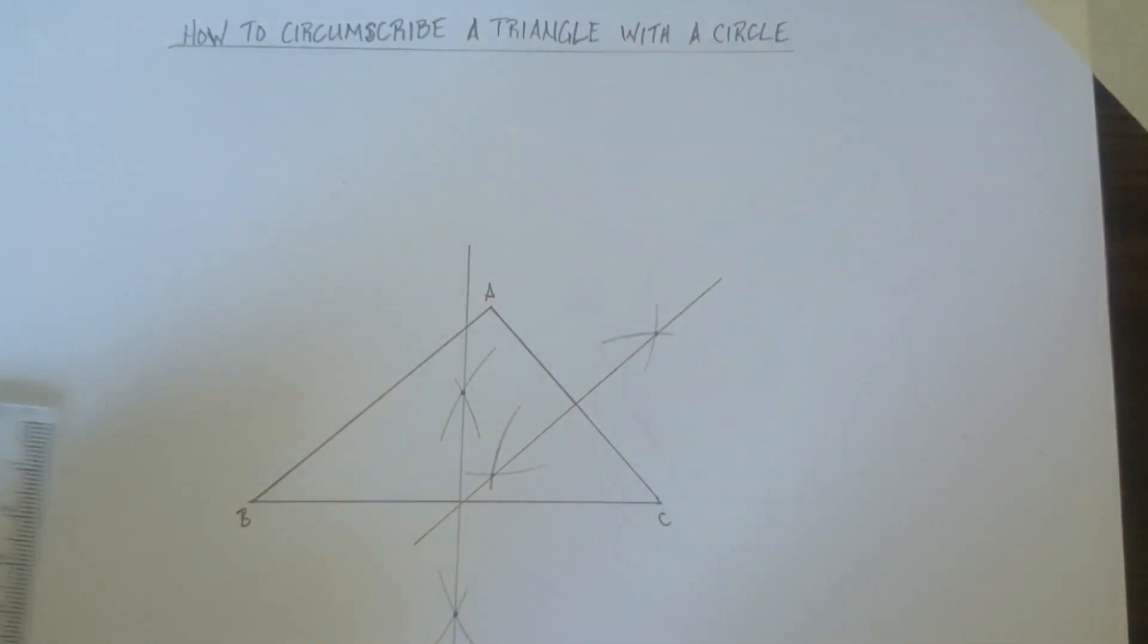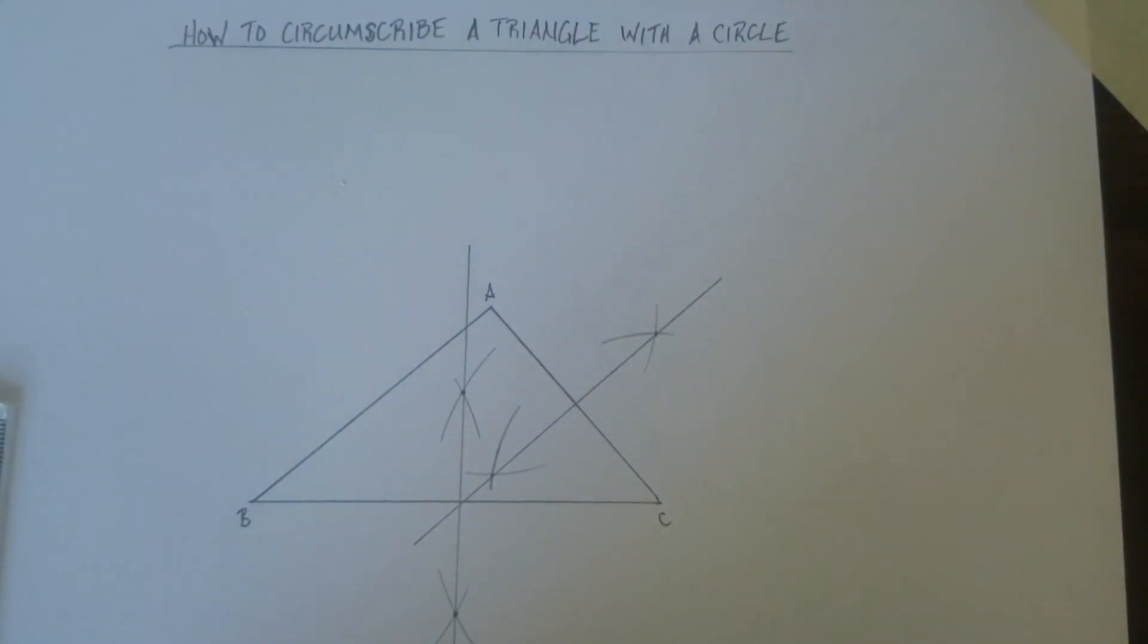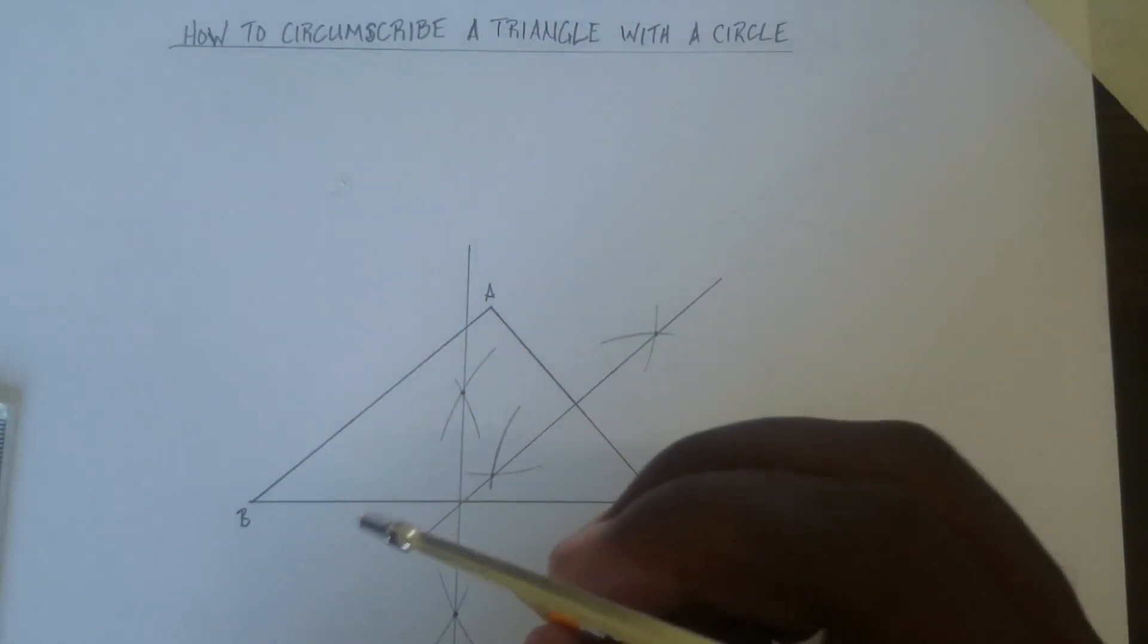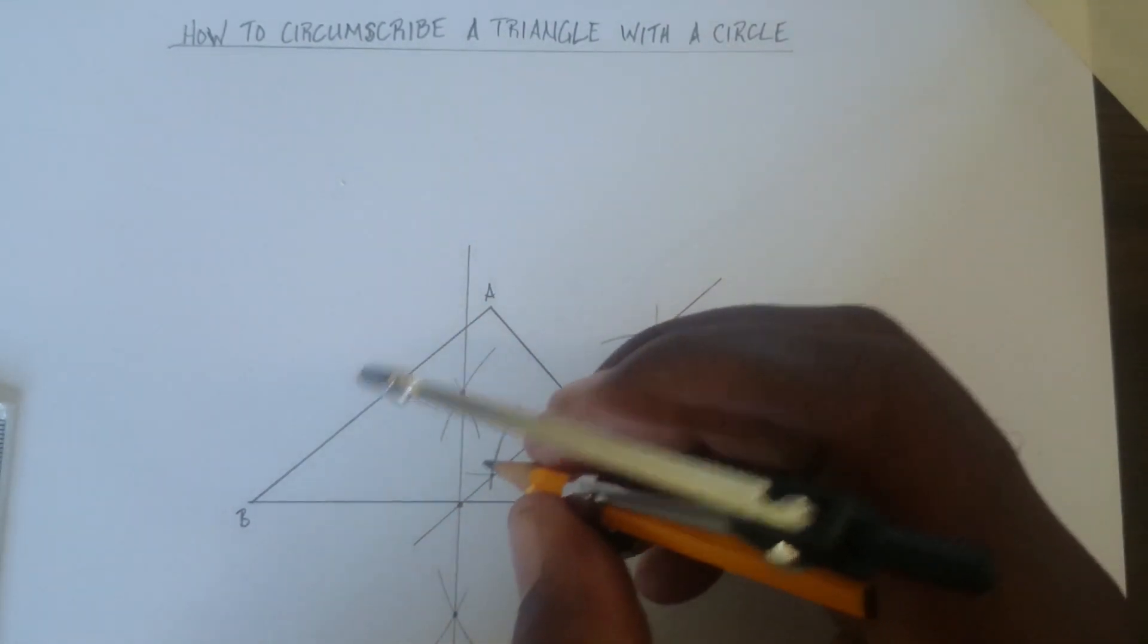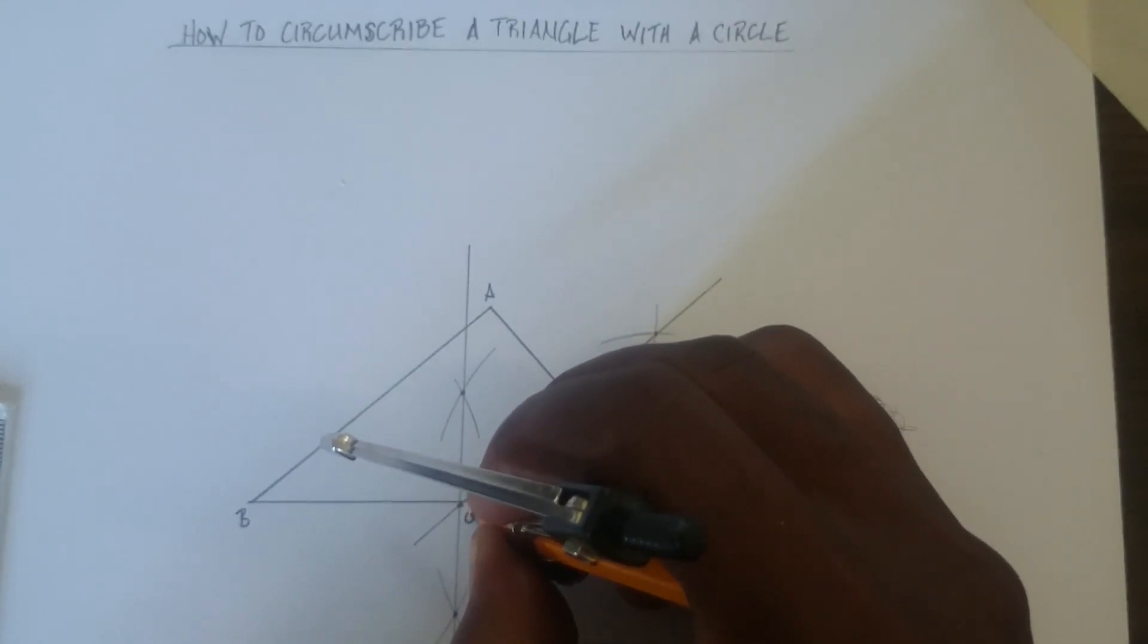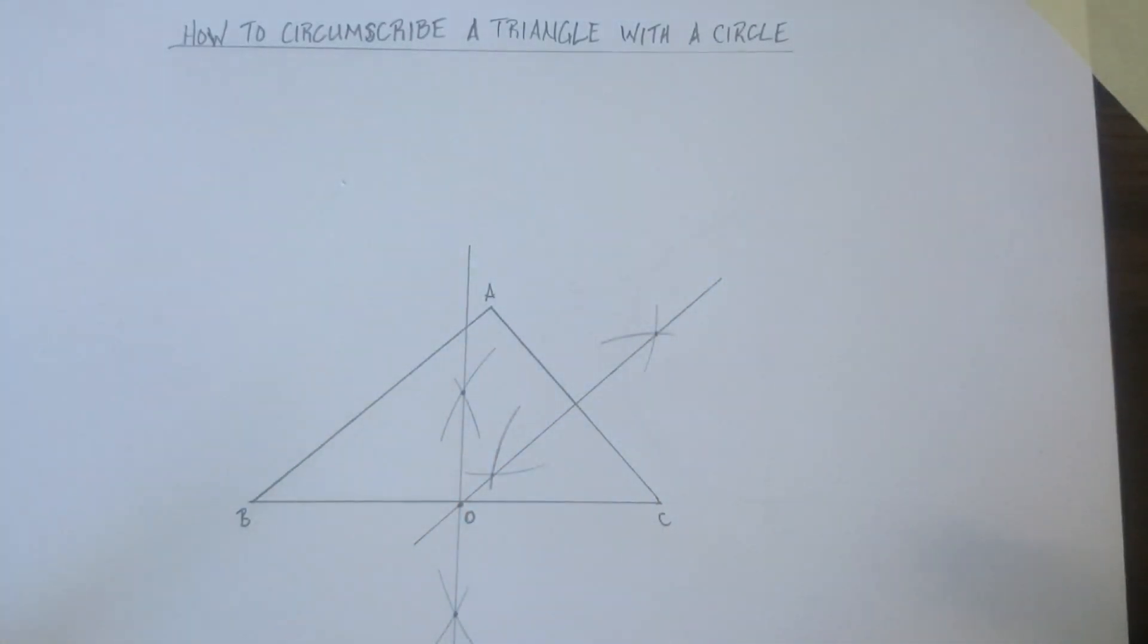So you have two points right here. Where the two lines meet, you're going to put your point and label that O. That's the center point of the circle.